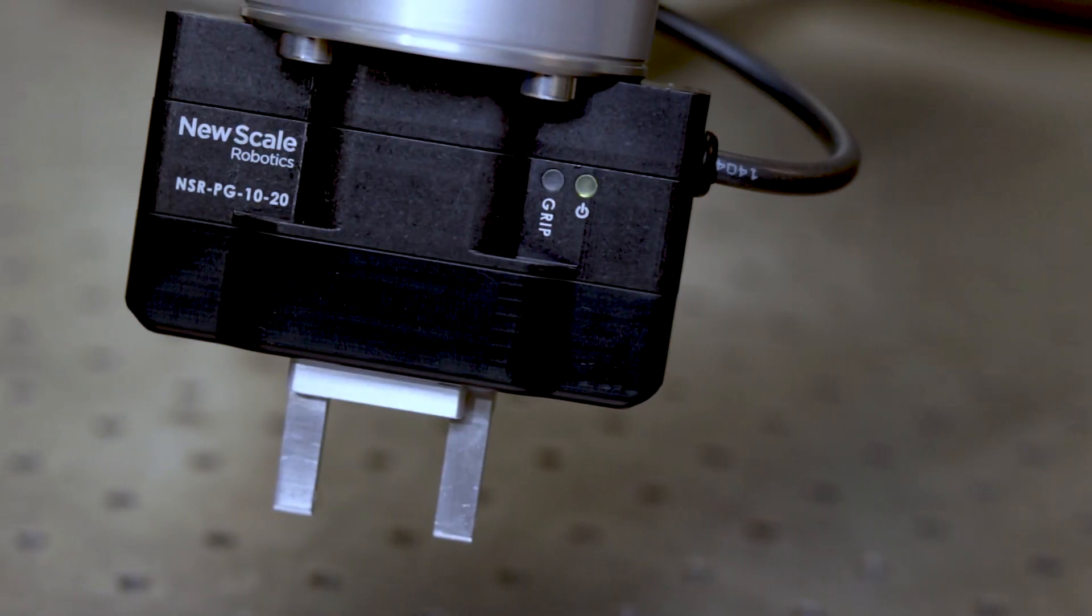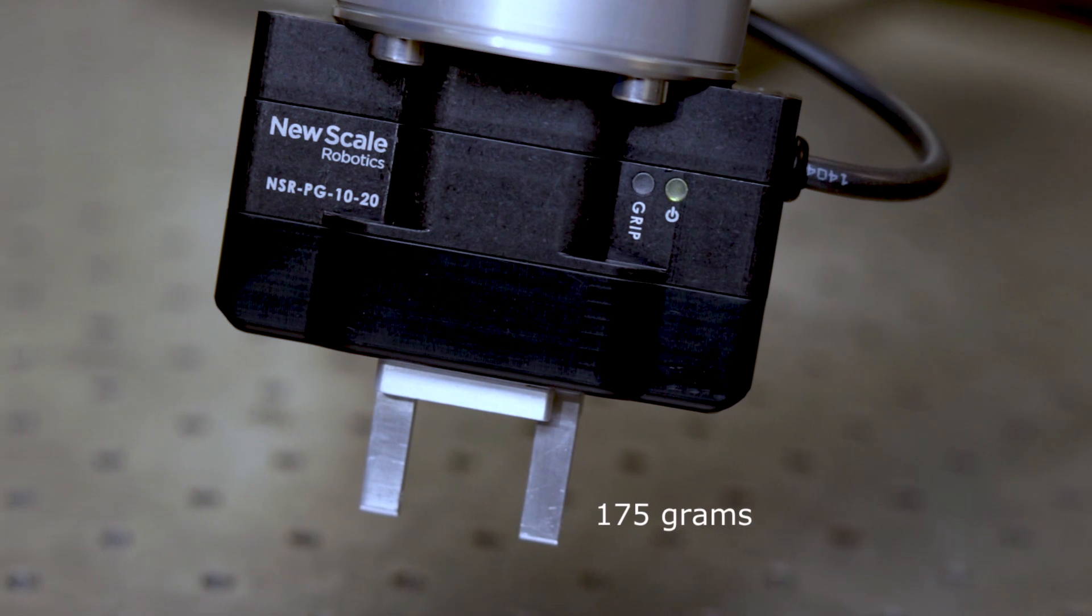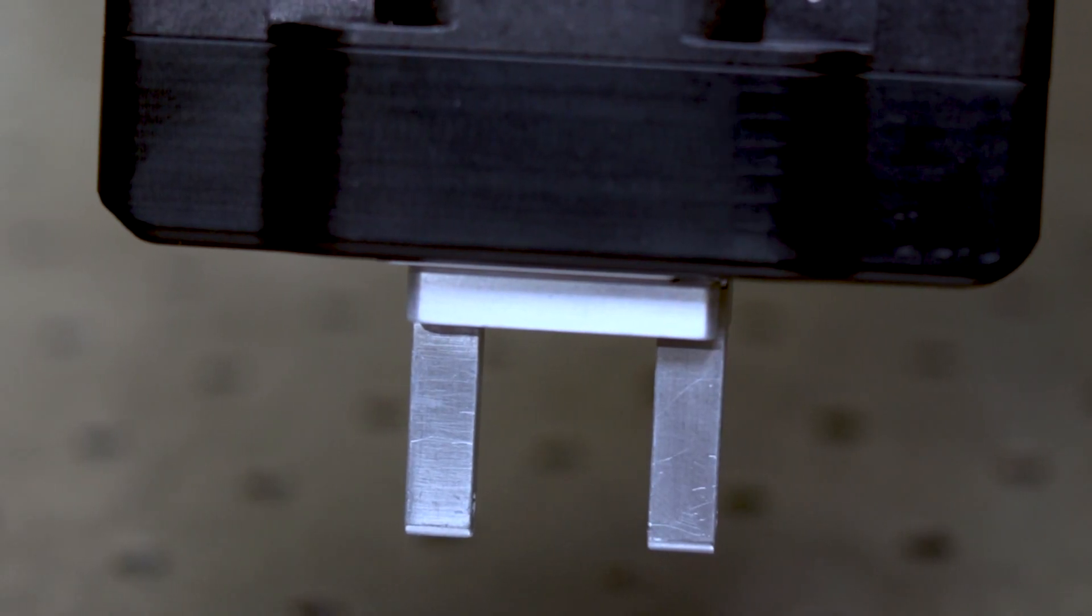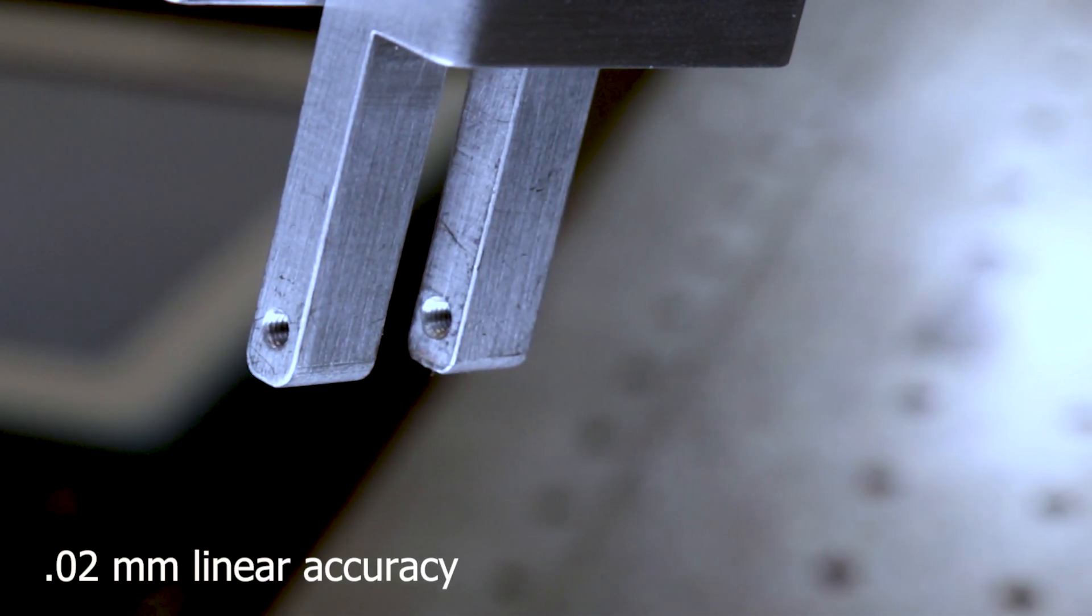We have used this experience to develop a smart parallel gripper weighing only 175 grams and moving with a linear accuracy of .02 mm over a range of 20 mm.